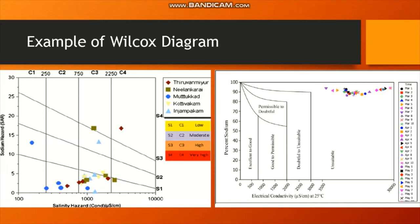Here you can see two pictures of Wilcox's diagram side by side. The first image represents sodium hazard as SAR — sodium absorption ratio — versus salinity hazard, which is the electrical conductivity value. In this Wilcox diagram they have separated various zones: S1-C2, S2-C2, S3-C3, and so on — categorized zone-wise.